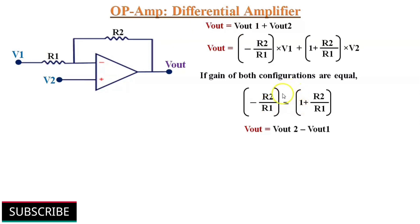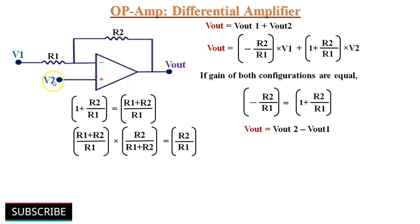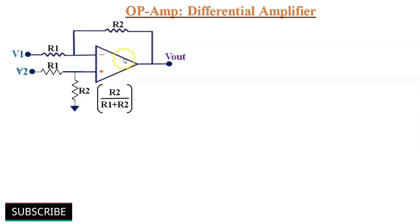To make both gains equal, we can write (1 + R2/R1) as (R1 + R2)/R1. To get the value R2/R1, we multiply by R2/(R1 + R2). So instead of applying V2 directly to the non-inverting terminal, we apply it through a voltage divider circuit of R2/(R1 + R2). This reduces the input voltage at the non-inverting terminal and makes the non-inverting gain equal to the inverting gain. The differential amplifier circuit uses equal-value resistors R1 and R2 at both terminals.